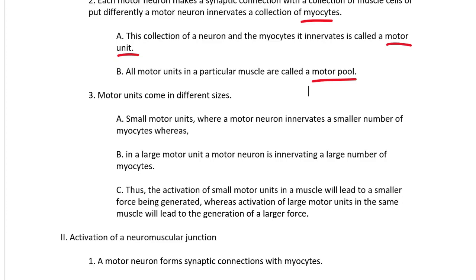In a muscle like the bicep, the collection of all motor units is called the motor pool. Motor units come in different sizes — small motor units where a motor neuron innervates a smaller number of myocytes, and large motor units where a motor neuron innervates a large number of myocytes. Activation of a small motor unit leads to a smaller force, while activation of a large motor unit leads to a larger force.